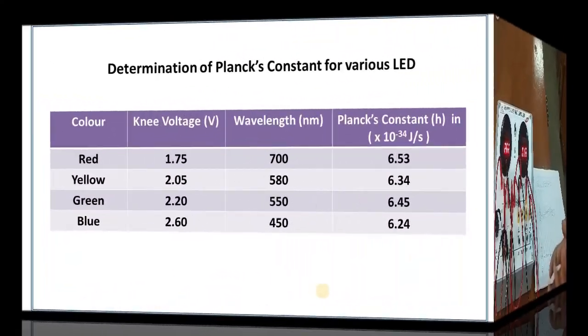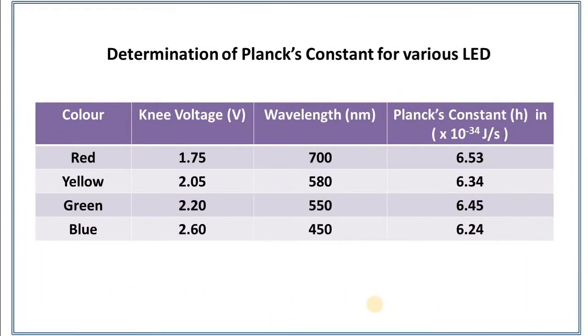This is the summary of the whole experiment. From this table, it is very clear that you have to find out knee voltage corresponding to each color LED. For red 1.75, yellow 2.05, green 2.2, blue is 2.6. And I have written out corresponding wavelengths. If you just use that formula, H equals to EV lambda upon C, you will find out Planck constant. This is the value of Planck constant for various colors LED.